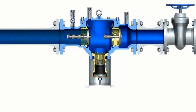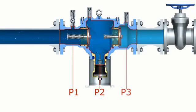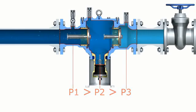During shutoff position, the pressure in the inlet zone is higher than in the middle zone, which in turn is higher than in the outlet zone. All zones are filled with water. Both check valves and the discharge valve are closed.